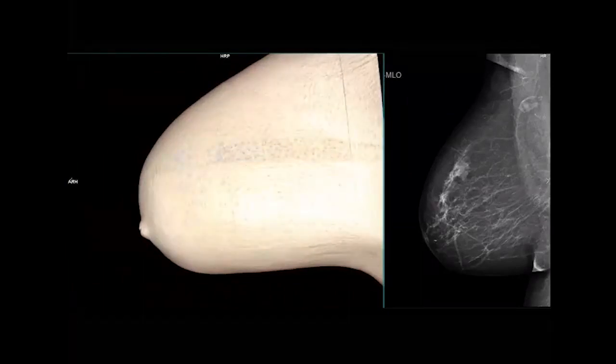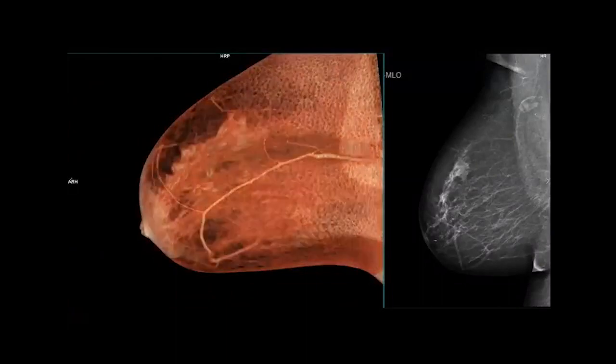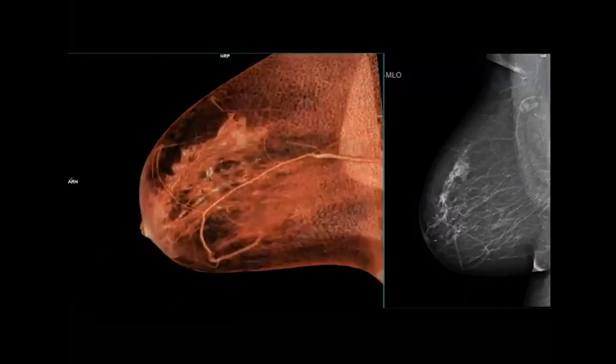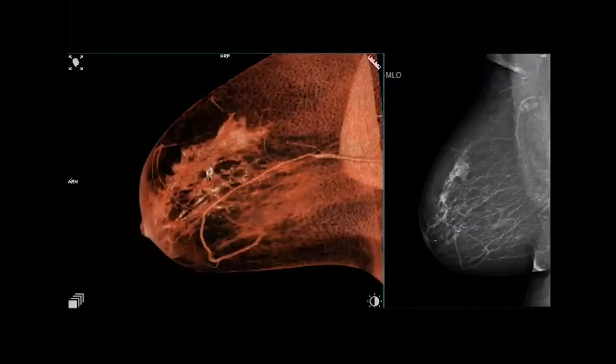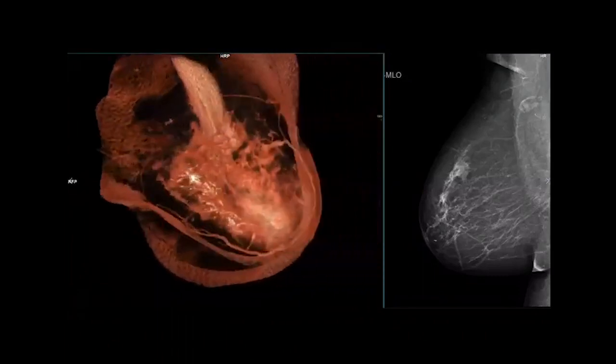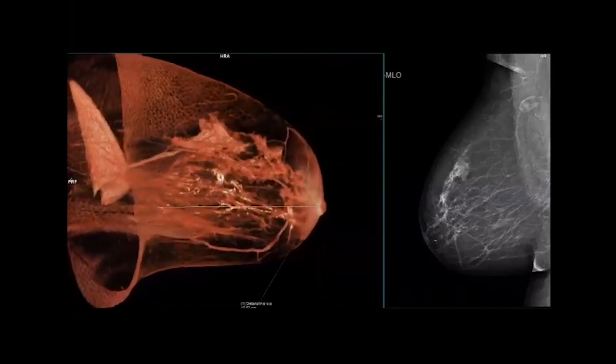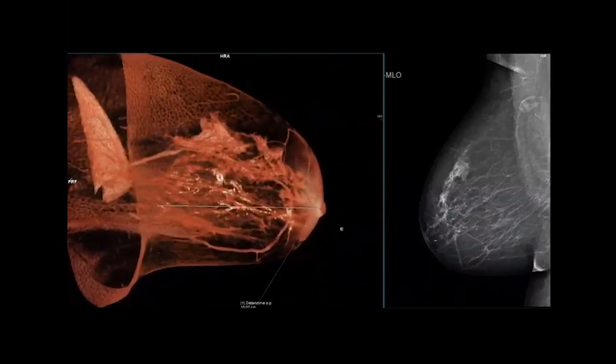You see the VRT performed of the 3D dataset of the high resolution MAMA CT in about 12 seconds scanning time and a resolution of 0.3 millimeters voxel in every direction, so an isometric dataset.